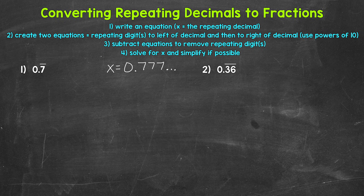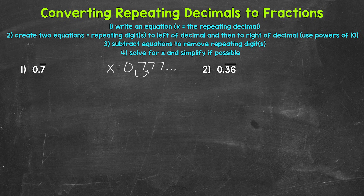We can multiply by powers of 10 — so 10, 100, 1000, and so on — in order to do this. Let's start by getting the repeating digit 7 just to the left of the decimal. We can do this by multiplying the right side of the equation by 10, which shifts our digits one place to the left — think of it as moving the decimal one place to the right. Whatever we do to one side of an equation, we must do to the other in order to keep it equivalent.